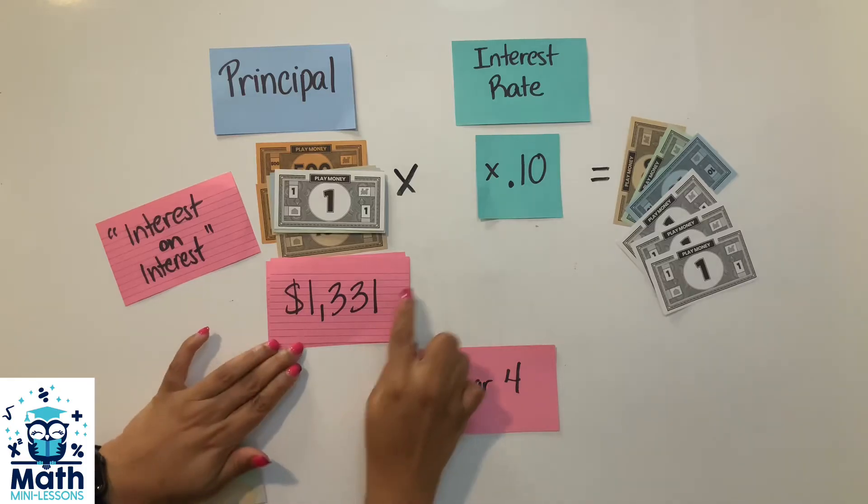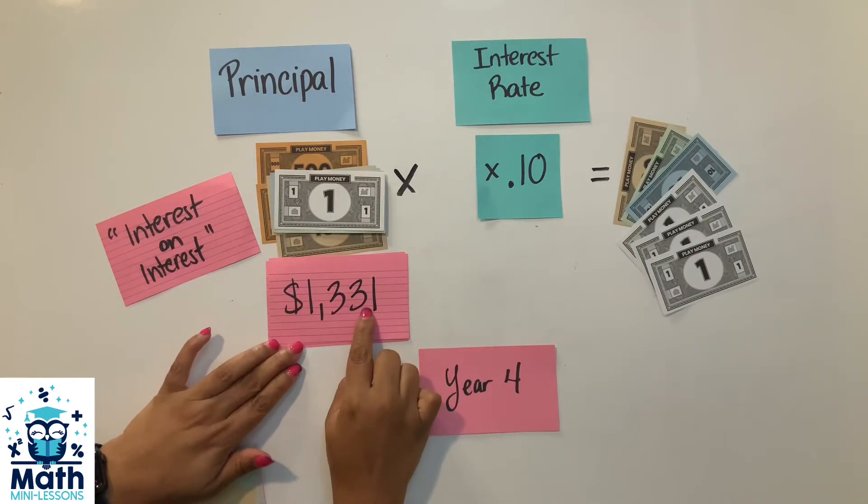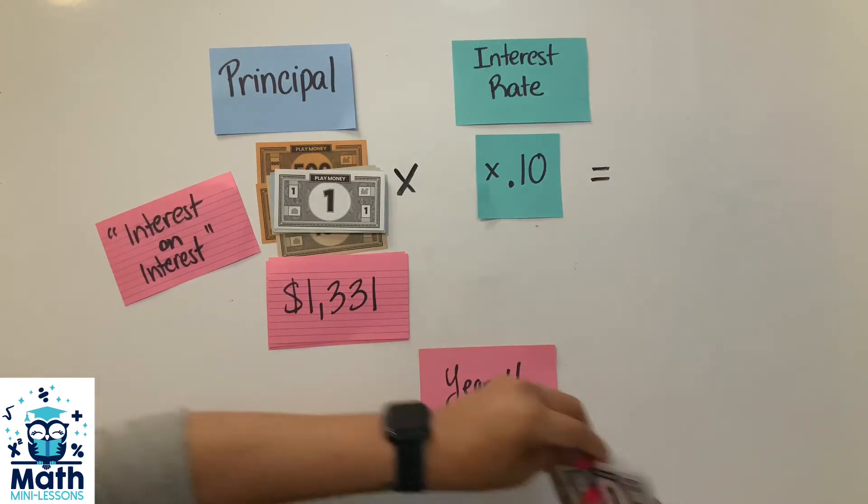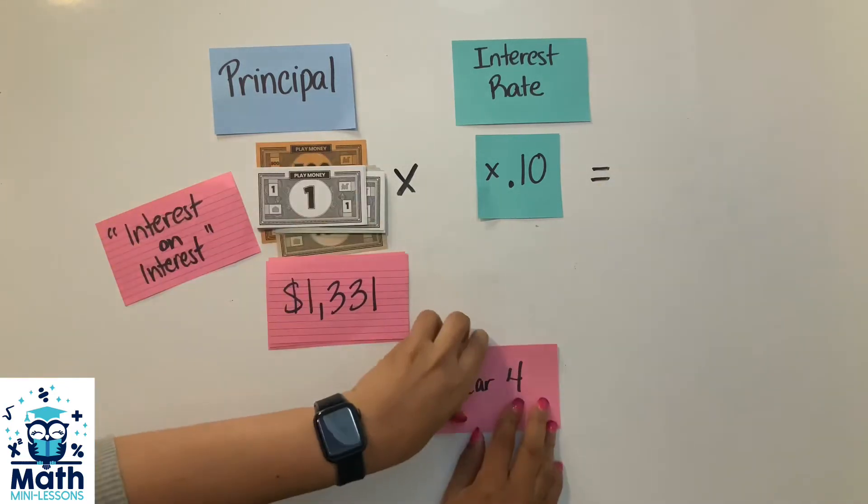Some of you might notice that because it's 10%, I'm just moving a decimal over by one, so it makes it a little faster to do. All right, so let's keep going. Same thing happens at the end of year four.